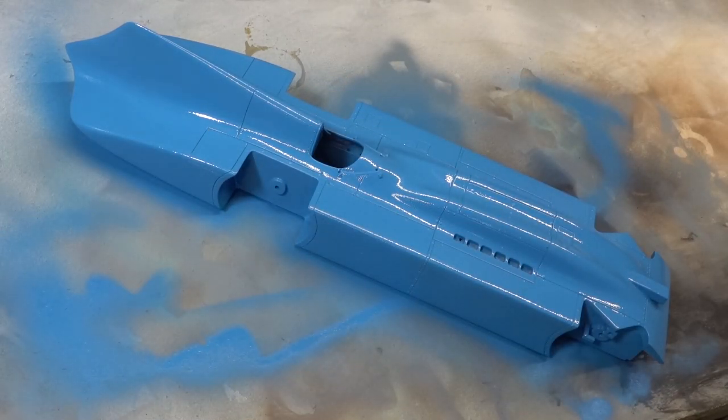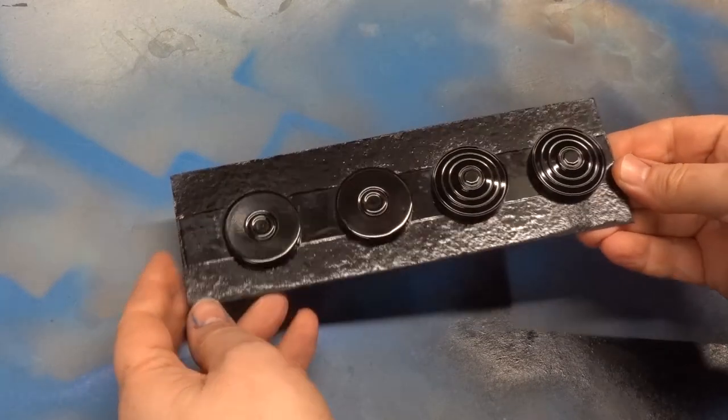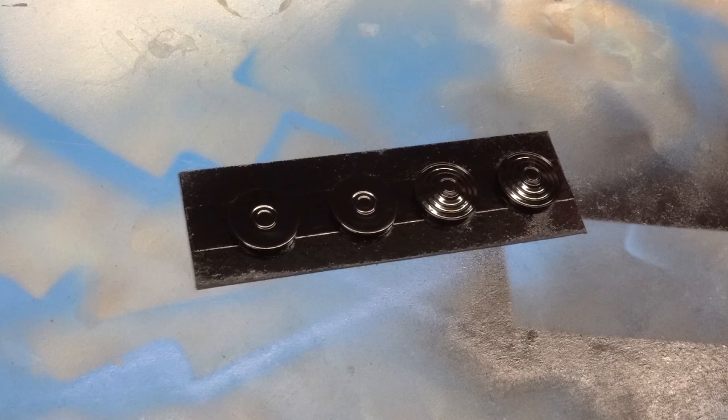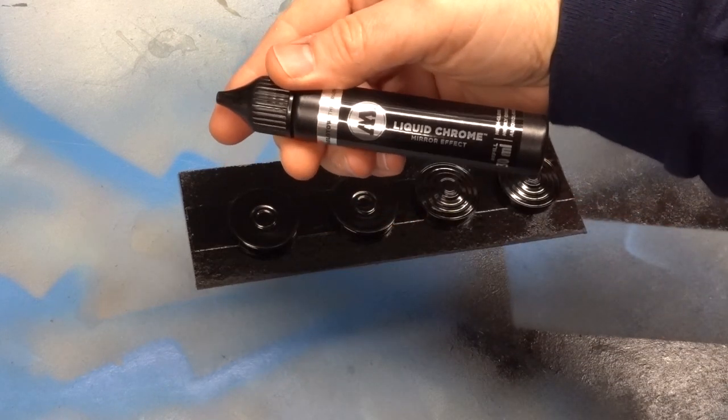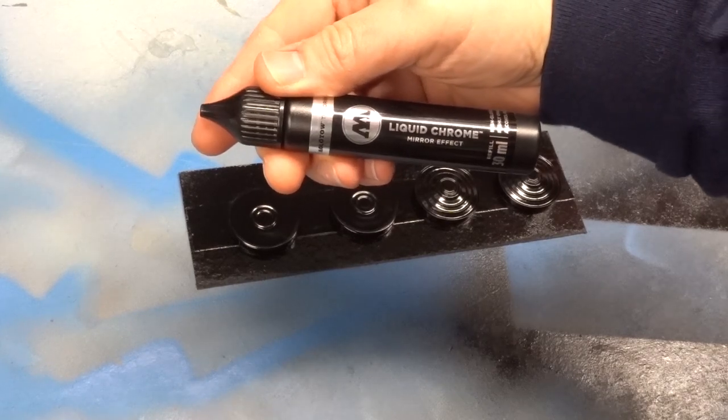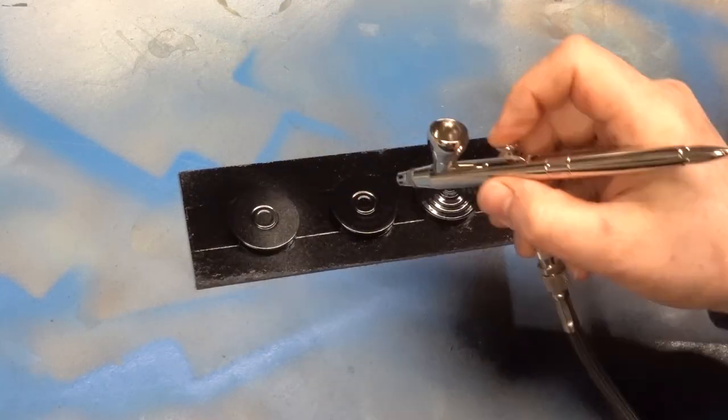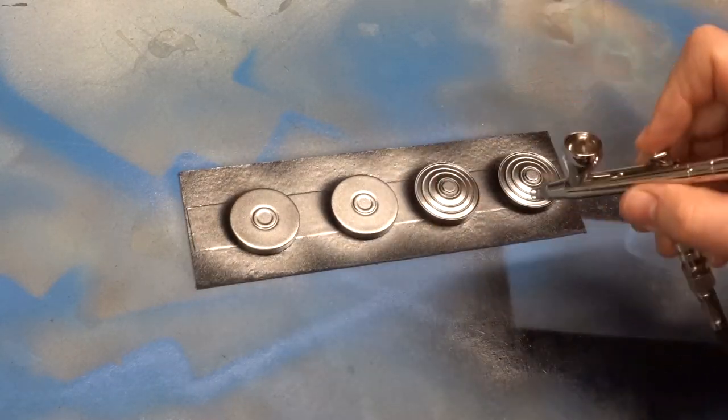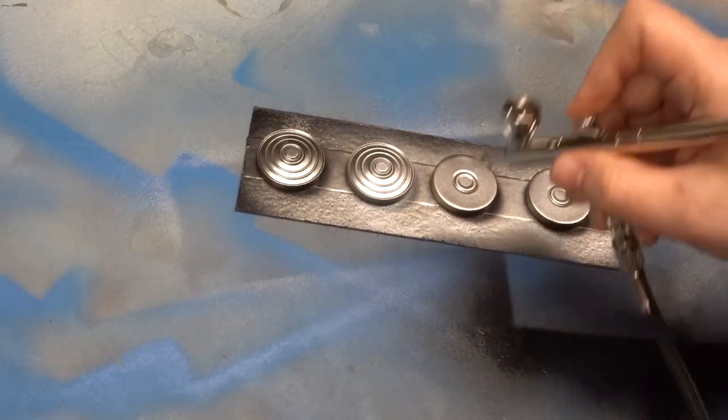Part of bluebird I always saw as a potential problem was the wheels. These were highly polished on the real car and I know how hard it is to get a good chrome finish. Fortunately there is a product made by Molotow which solves this problem. It's normally sold as a paint pen but if you buy the refill you can put it through your airbrush without any thinning.